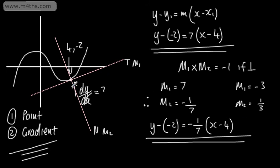So the normal to the equation at this point — again, the normal is simply a line and we need a point and a gradient. This one would be y subtract negative 2 equals negative 1 over 7, then x minus 4. A tangent is a straight line that touches the curve at a given point. To find the equation, we find the point and find the gradient using dy by dx. The normal is perpendicular to the tangent, so the product of the gradients is negative 1. If m₁ equals 7, then m₂ equals negative 1 seventh.